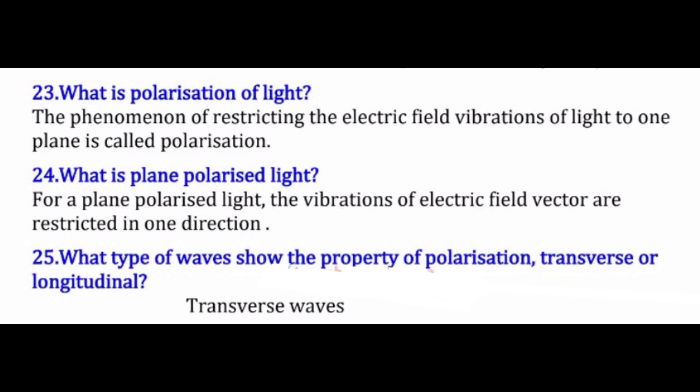The next question is: what is polarization of light? Polarization is the phenomenon of restricting the electric field vibrations of light to one plane. For plane polarized light, the electric field vector vibrates in only one direction. Polarization is a property of transverse waves only — not longitudinal waves.